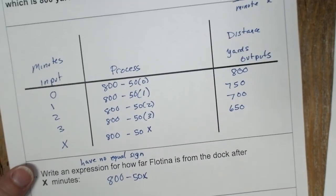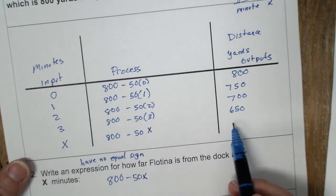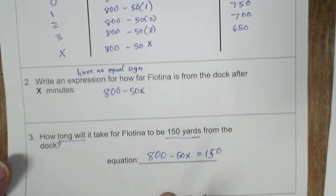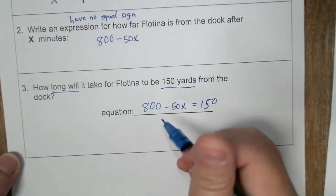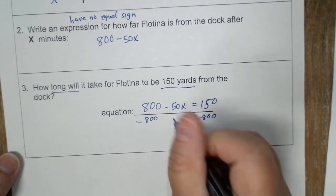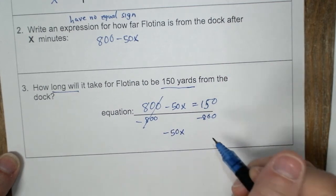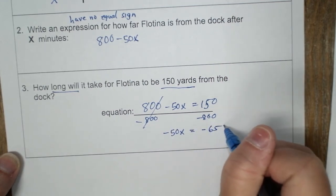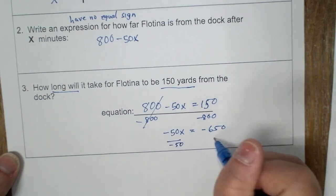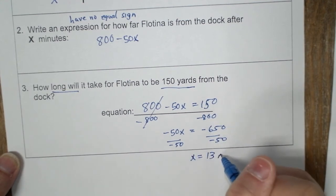Now, this table, you could continue drawing it out and doing every value until you got to the 150. The problem is, it might not be a whole number. That's why solving equations comes in handy. So we subtract 800 from both sides. Be careful when this goes away that you bring down a negative 50X. And this becomes negative 650. And then divide by negative 50, divide by negative 50, and X equals 13 minutes.